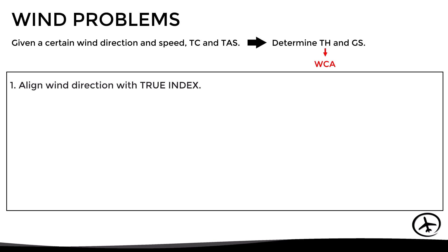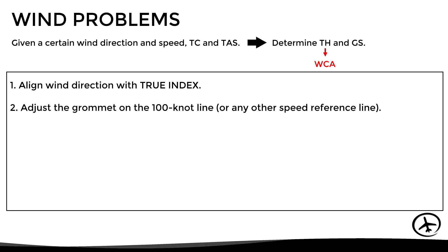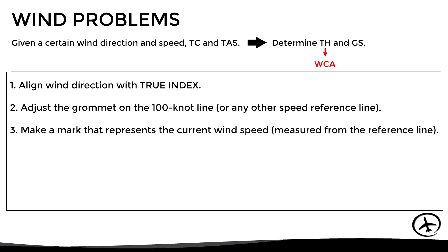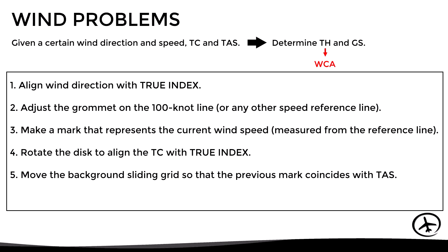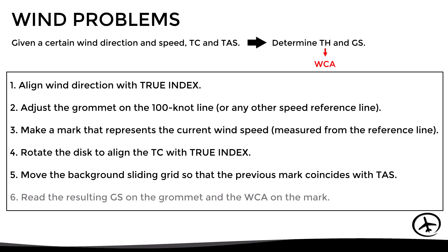First, align the wind direction with the true index. Then, adjust the grommet on the 100-knot line, or any other speed reference line that we wish. Then, make a mark with a pen or marker that represents the current wind speed, measured from the reference line where the grommet is located. Then, rotate the disk to align the true course with the true index, and move the background sliding grid so that the mark coincides with the true airspeed. Finally, read the resulting ground speed on the grommet and the wind correction angle on the mark.